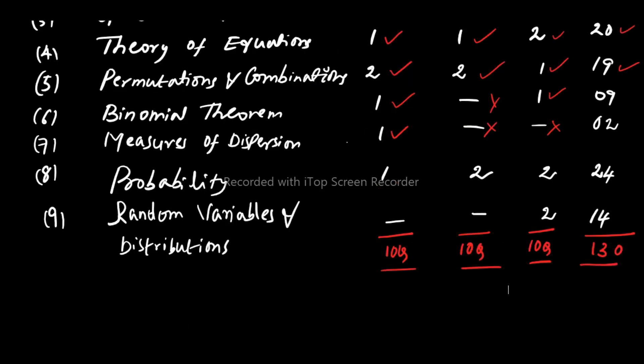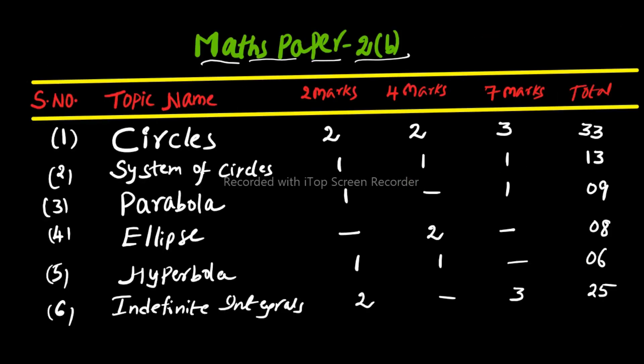Next topic is Probability. From Probability: 1 two-mark question, 2 four-mark questions, and 2 seven-mark questions, totalling 24 marks weightage. The last topic is Random Variables and Distributions — no 2 marks, no 4 marks, but 2 seven-mark questions — giving 14 marks weightage. This covers Maths Paper 2A.